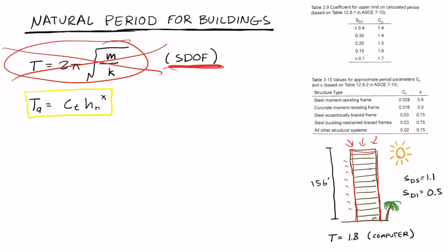A computer can analyze the building, and in this example, the computer outputs 1.8 seconds for the period. We have to actually check this value, and that's why we're going to find the approximate natural period.